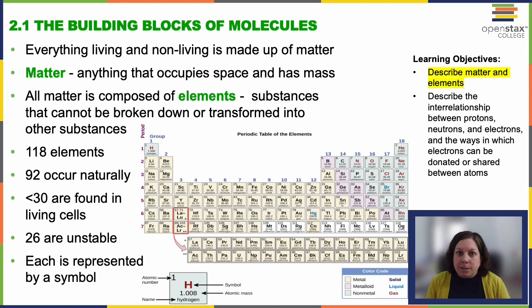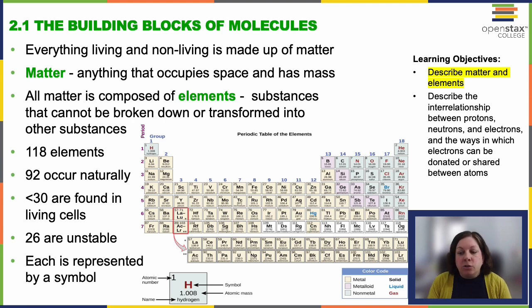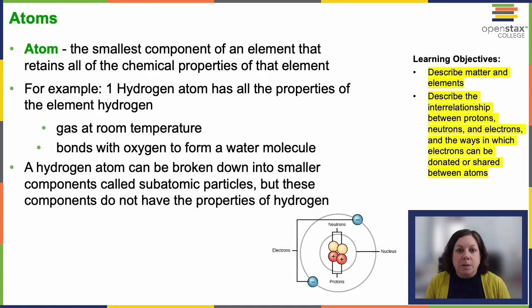Each element is designated by a chemical symbol, such as H for hydrogen, C for carbon, N for nitrogen, O for oxygen, and each possesses unique chemical properties. An atom is the smallest component of an element — it retains all the chemical properties of that element.